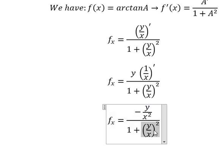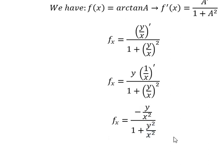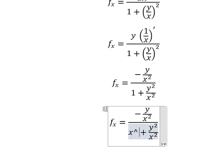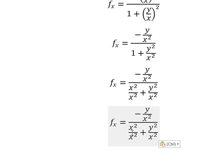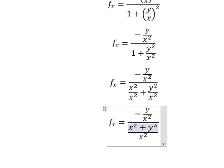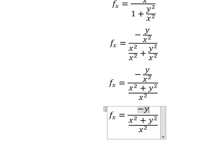And this one we have y squared over x squared. We know that number one is x squared over x squared. Now we can do common denominator, and we can simplify x squared and x squared, so we have like this.